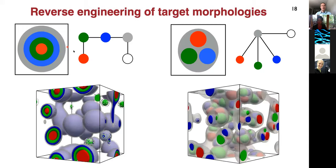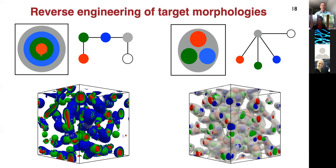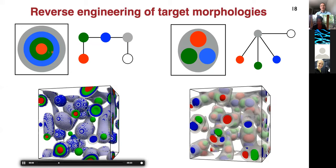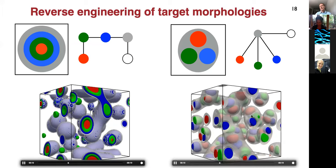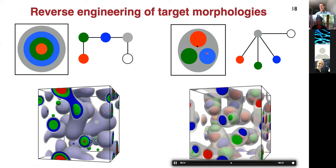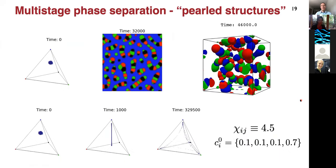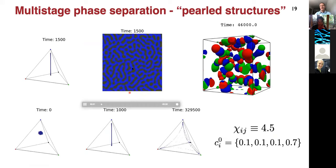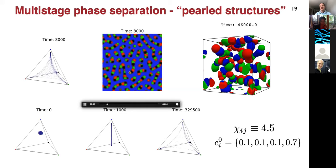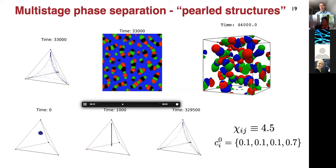Here are two more examples. In the spirit of nucleoli, we wanted to have a nested structure — so we did a nested structure with five phases corresponding to a line graph. On the right, we wanted to encapsulate three different phases shielded from each other within some environment. Also, in all of these movies it looked like everything phase separates at once, but you can also have cases where phase separation happens in stages — first you get two phases that form, and then one of them separates into three more phases. This spinodal decomposition can happen in multiple stages, giving pearl structures that eventually break into droplets.